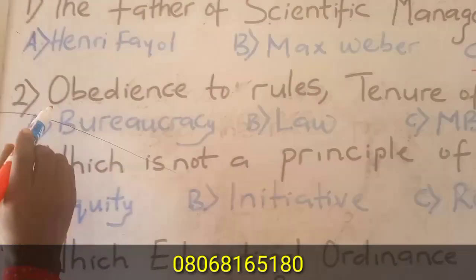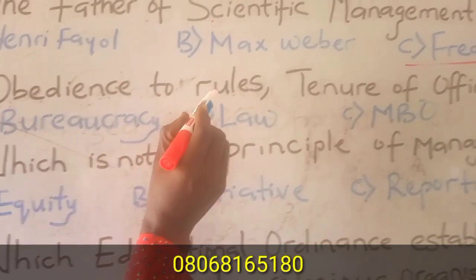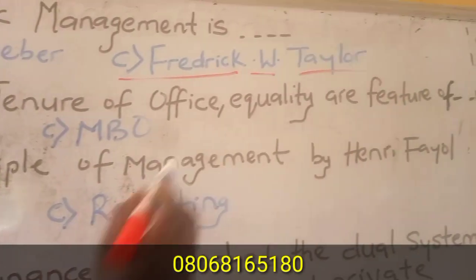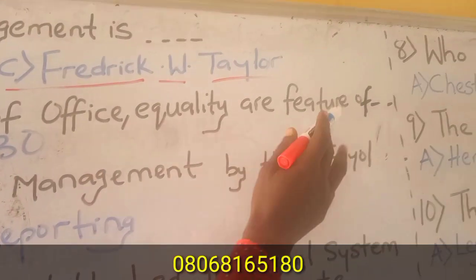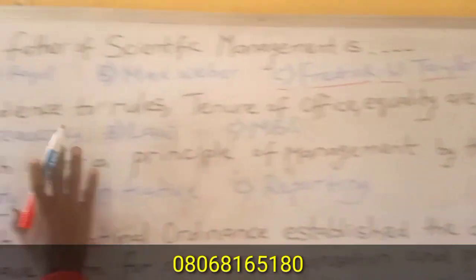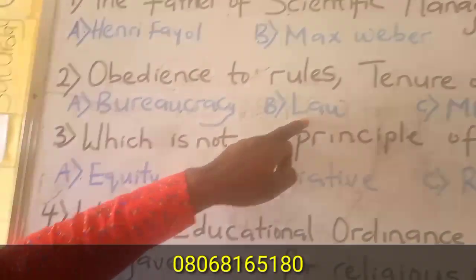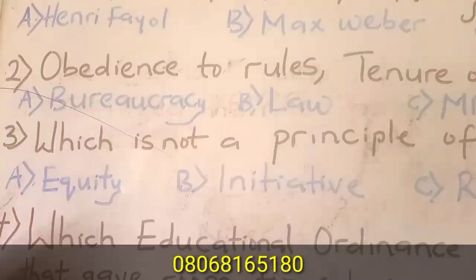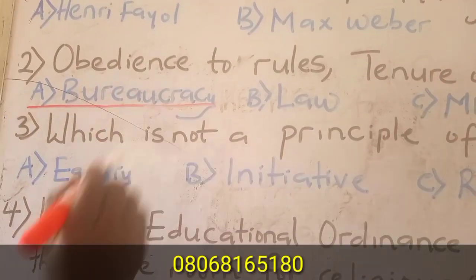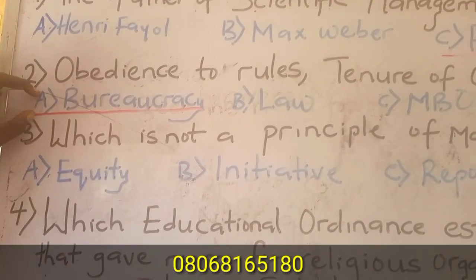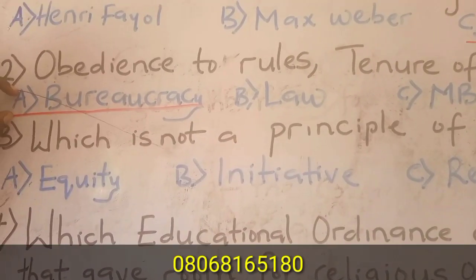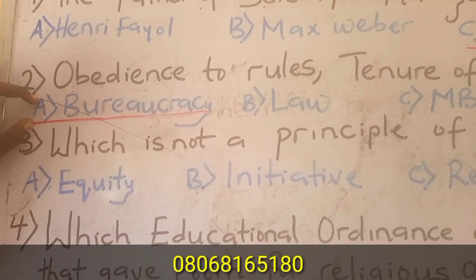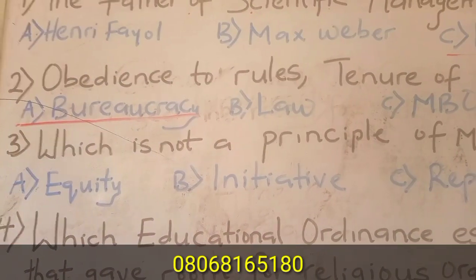Question two: Obedience to rules, tenure of office, and equality are features of what? Many of you may think the answer is law, but it is not law. The answer is Bureaucracy. Bureaucracy believes in obedience to rules, doing things in the right way and following the right direction. Those are the features of Bureaucracy.